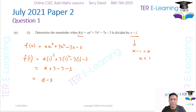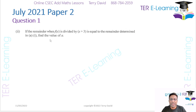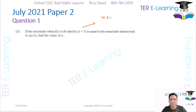The next part — Part 2 — says: if the remainder when f of x is divided by x plus 3 equals the remainder we just got, then we set x plus 3 equal to 0, therefore x equals minus 3.